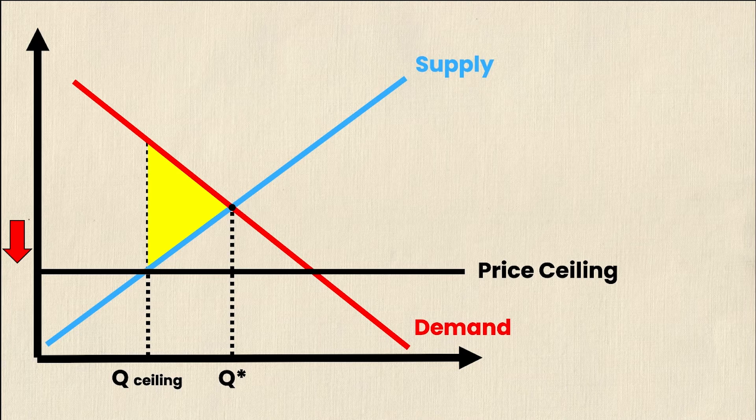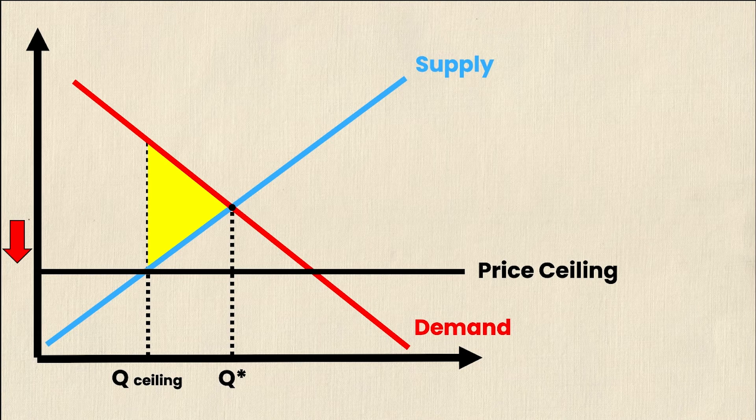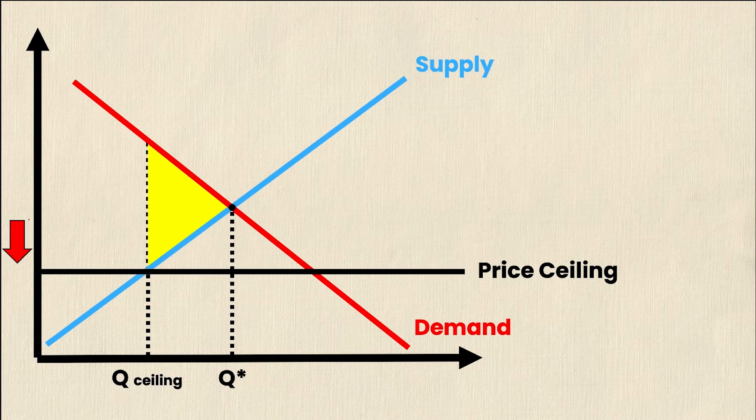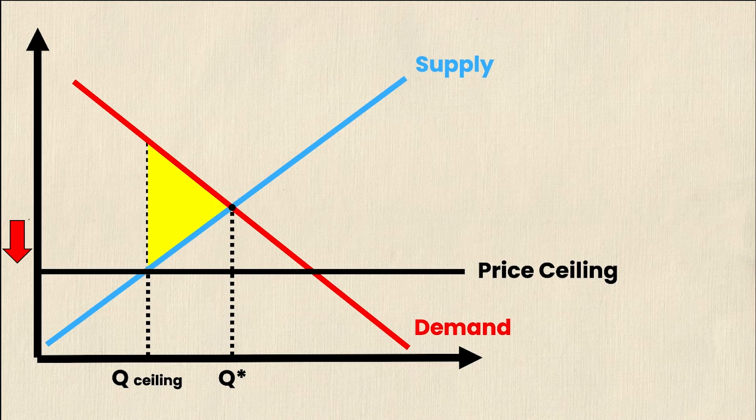Now you may recognize that price ceilings and price floors look just like the graphs for shortages and surpluses respectively. And that's because in both cases, government price controls knock the market out of equilibrium and therefore exhibit the exact same conditions as if there was a shortage or a surplus from some other non-price related shock.